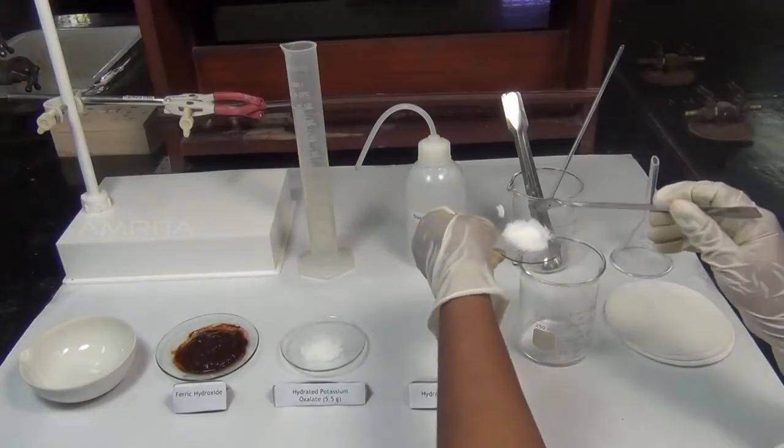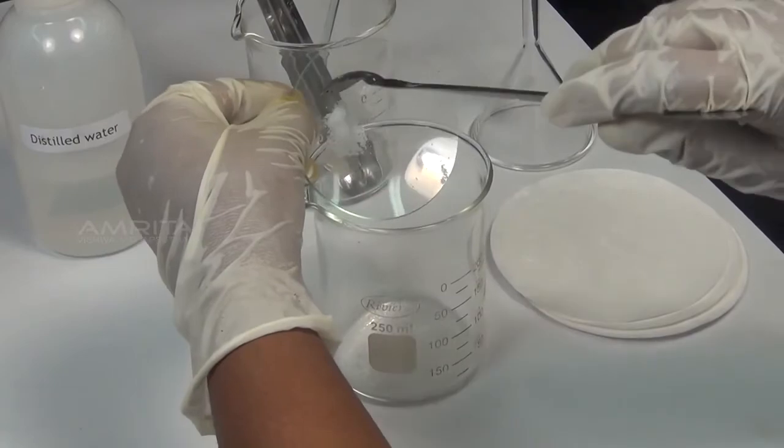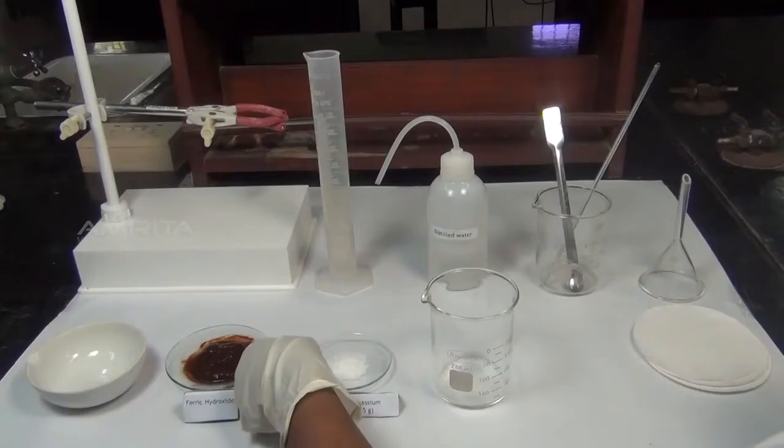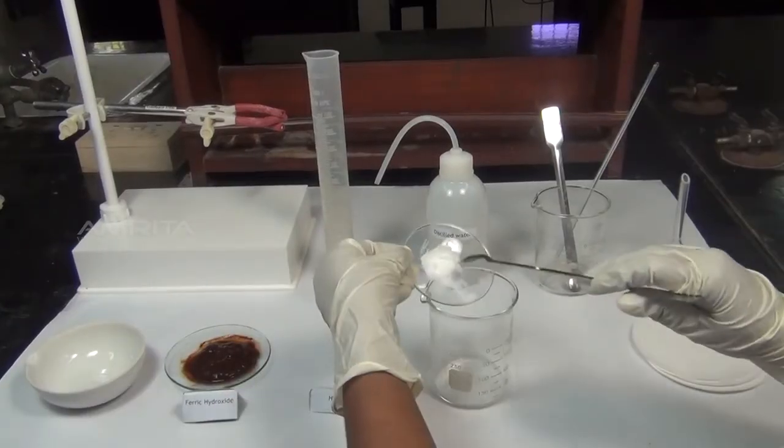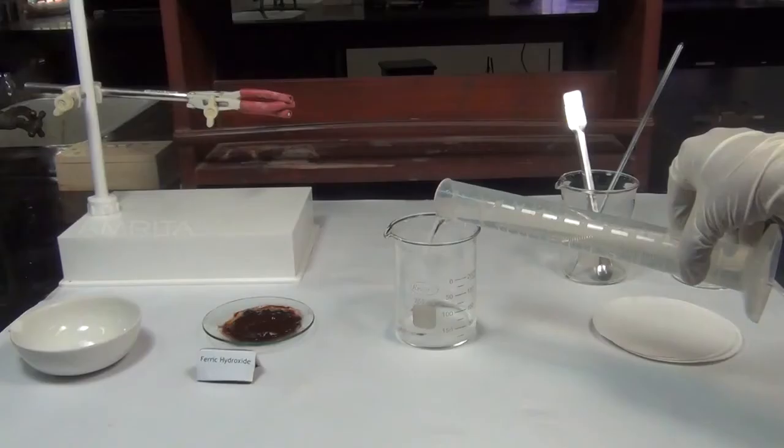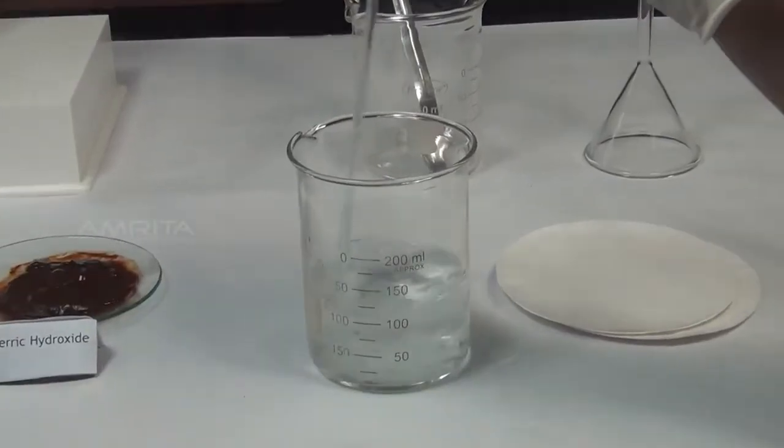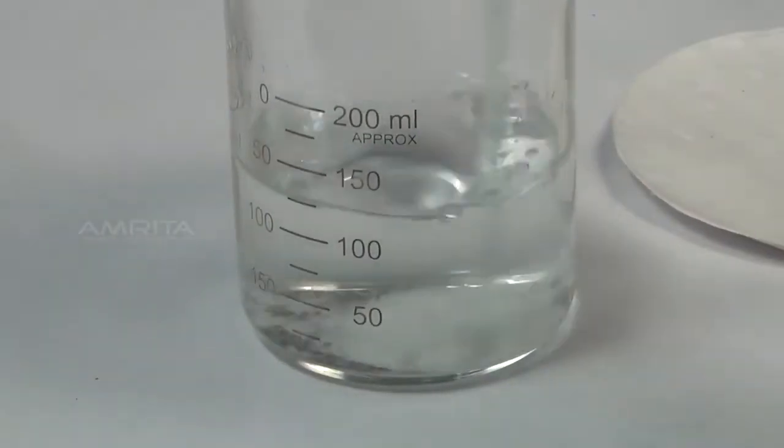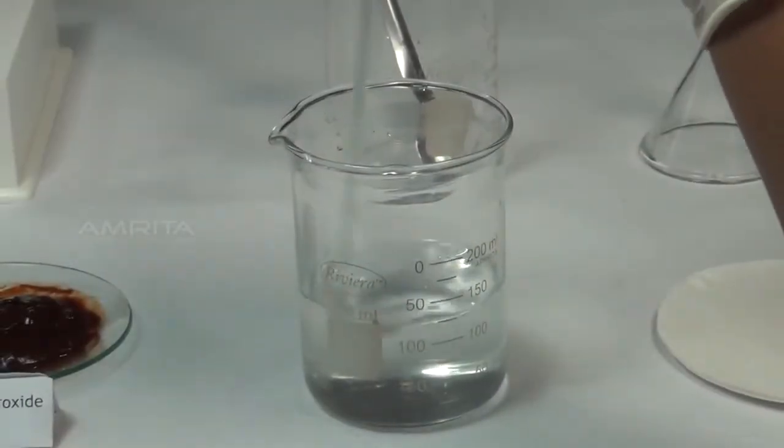In another beaker, take 4 g of hydrated oxalic acid and 5.5 g of hydrated potassium oxalate. To this add about 100 ml of distilled water. Stir the solution thoroughly using a glass rod to get a clear solution.